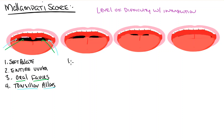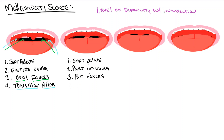In Class 2, we can still see the soft palate, but now we can only see part of the uvula. We can see part of the oral fauces, but we cannot see the tonsillar pillars.